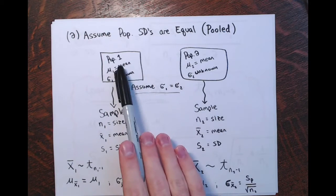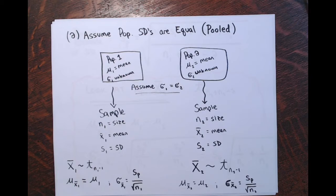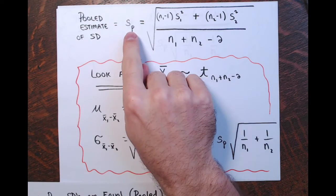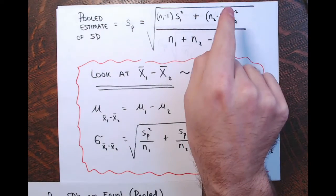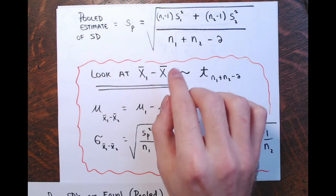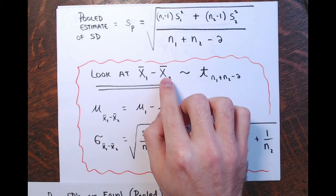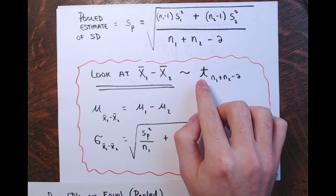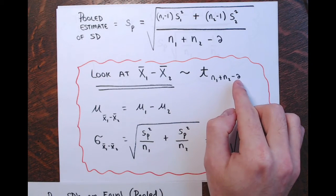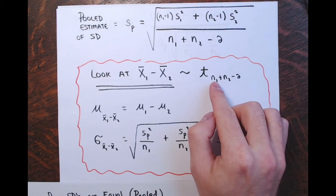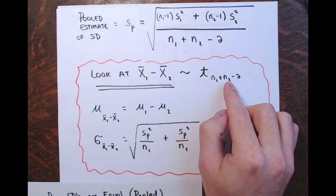In the first video on this objective, I drew pictures and explained what was happening — how we had to find this pooled estimate of the standard deviation of the populations, SP, with this calculation. And then we looked at the distribution of X1 bars minus X2 bars in these pooled scenarios. The distribution of the difference in sample means would be a Student's t-distribution with N1 plus N2 minus 2 degrees of freedom, where N1 and N2 are just the sizes of samples 1 and 2.